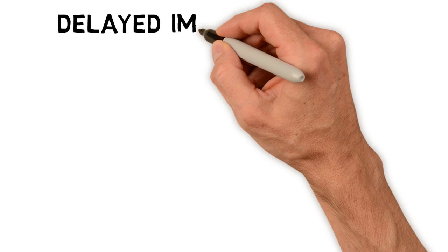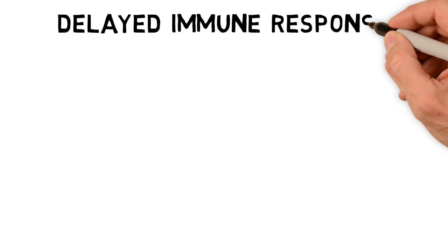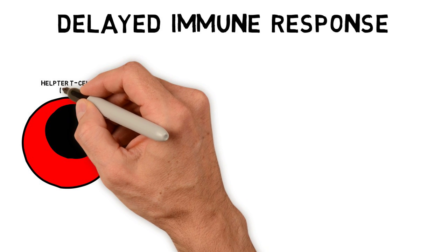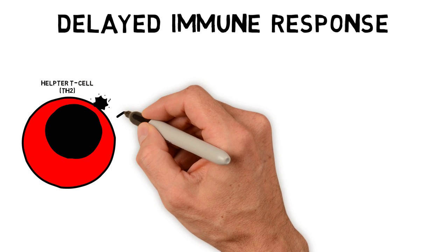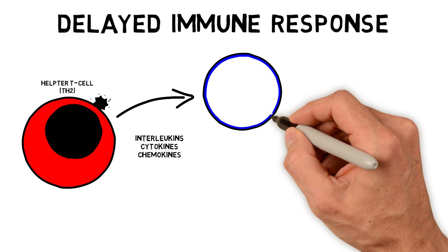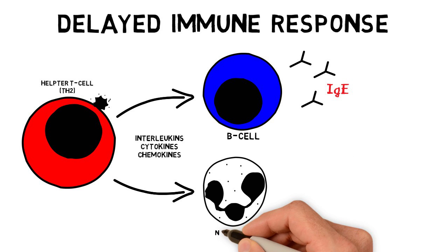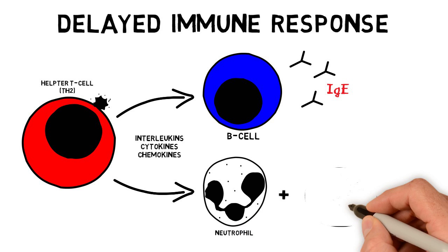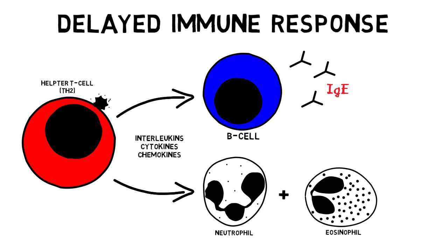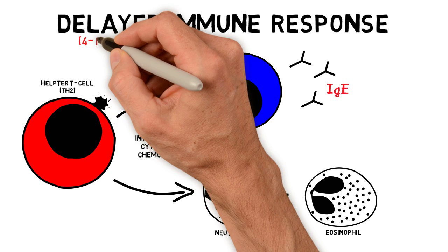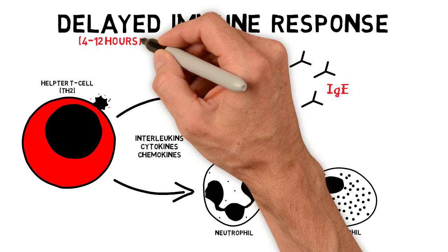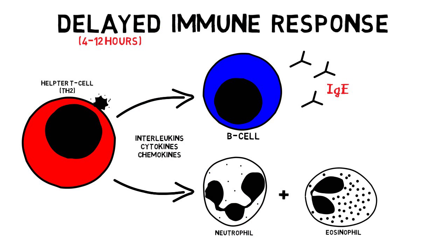There is also a second delayed immune response. Helper T cells also bind the allergen and release pro-inflammatory cytokines that stimulate B cells to release more IgE and recruit both neutrophils and eosinophils to the mucosa. As these cells arrive, the mucosa becomes inflamed and further enlarged, which causes both increased airway reactivity and worsened obstruction. This second immune response peaks 4 to 12 hours after allergen exposure.